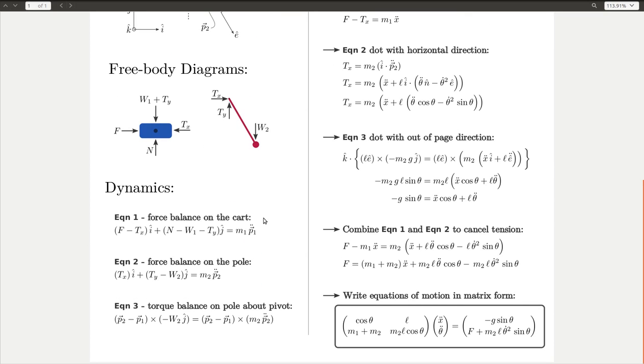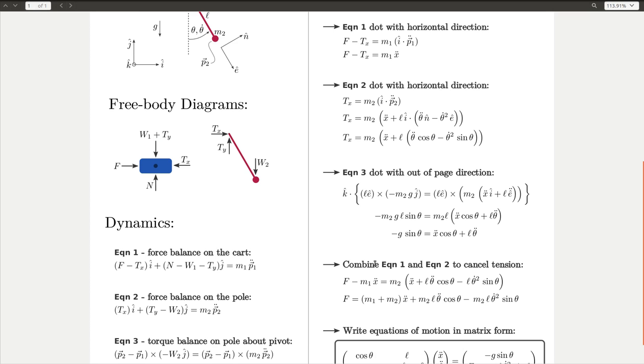There are a huge number of ways of simplifying these equations to solve for x double dot and theta double dot, and I'm just going to show you one way that I happen to know works, but you could come up with many other ways. The first thing I'm going to do is take equation one, the force balance in the cart, and dot it with the direction i. This is just essentially writing the horizontal component of this equation. That's going to look like this. P1 is already in the i hat direction, so i hat dot i hat is one, and we're left with m1 x double dot. A nice simple equation for our first one.